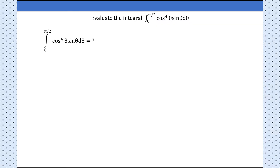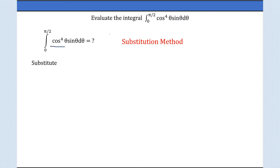Let's evaluate the integral from 0 to π/2 of cos⁴θ · sinθ dθ. I'm going to follow the substitution method. When we substitute, we take the high power term — here the high power term is cosine — so we substitute u = cosθ.